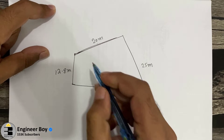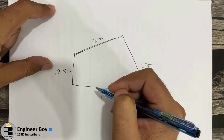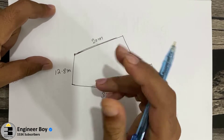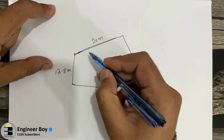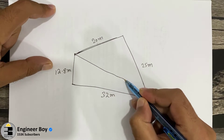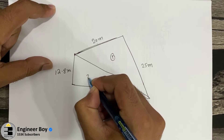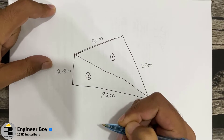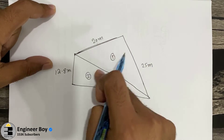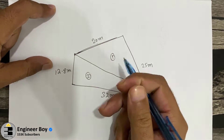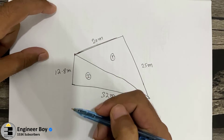In order to determine the area of this property, there are actually two methods. One is to split the property into two triangles. I can do that by splitting the property just like this — this is triangle one and this is triangle two. We're going to determine the area of each triangle and the summation of both triangles gives the total area.